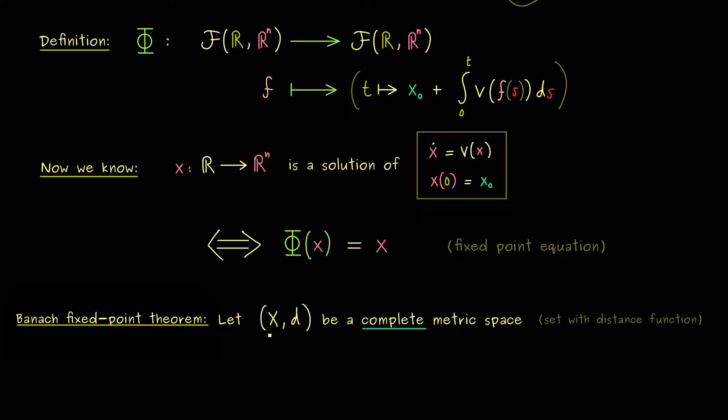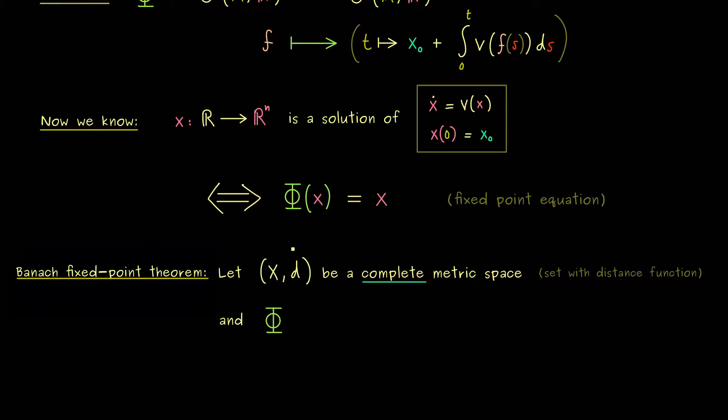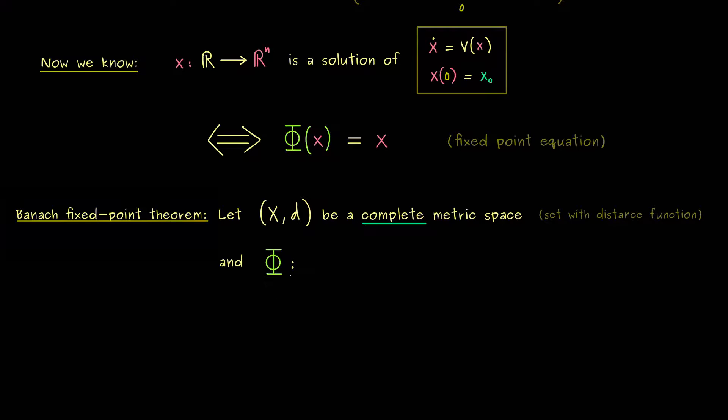A typical example of such a complete metric space is ℝⁿ together with the standard Euclidean distance function. However, in this context this example is not enough, because in the end we want to apply this theorem for the function space here. Therefore, maybe we can already choose the same name for the function we want to find fixed points for. Hence, here Φ is a map from X into X. And moreover, Φ has to be a so-called contraction. This simply means that it makes distances smaller. And this is such an important concept that we should really write down the definition of this.